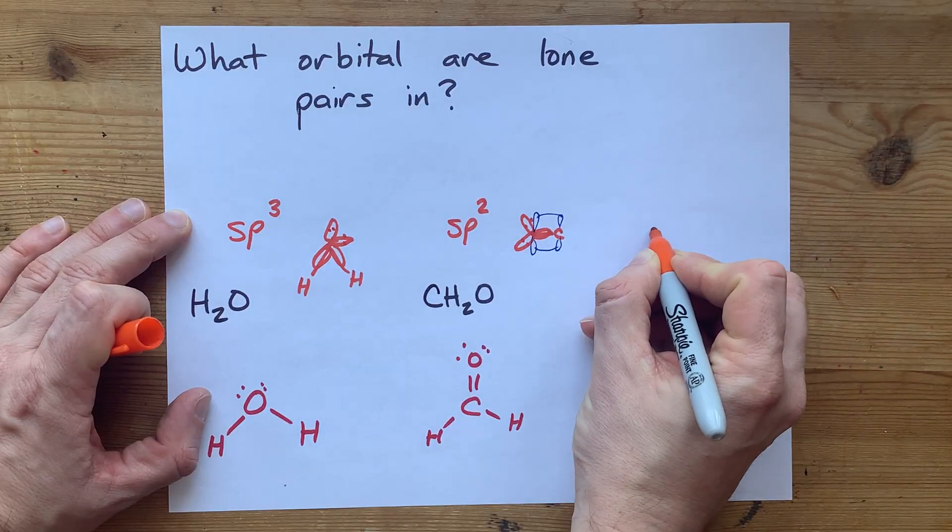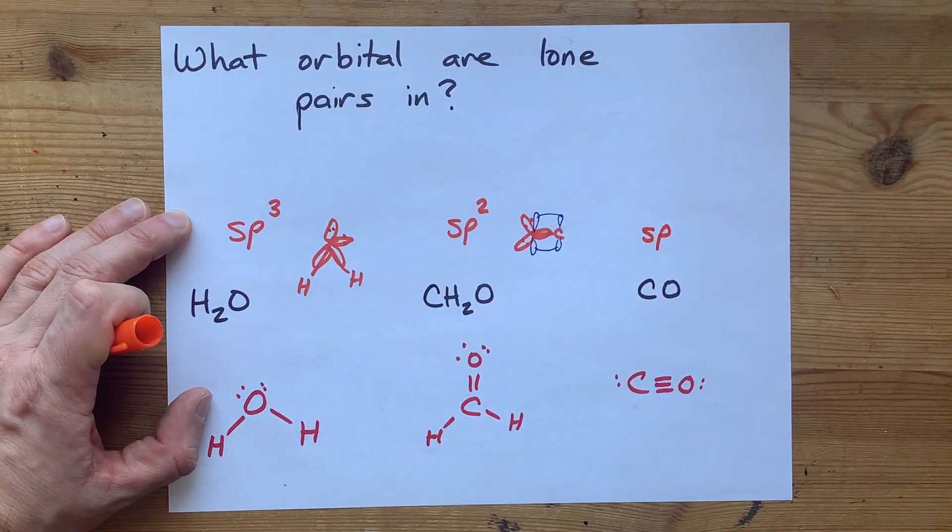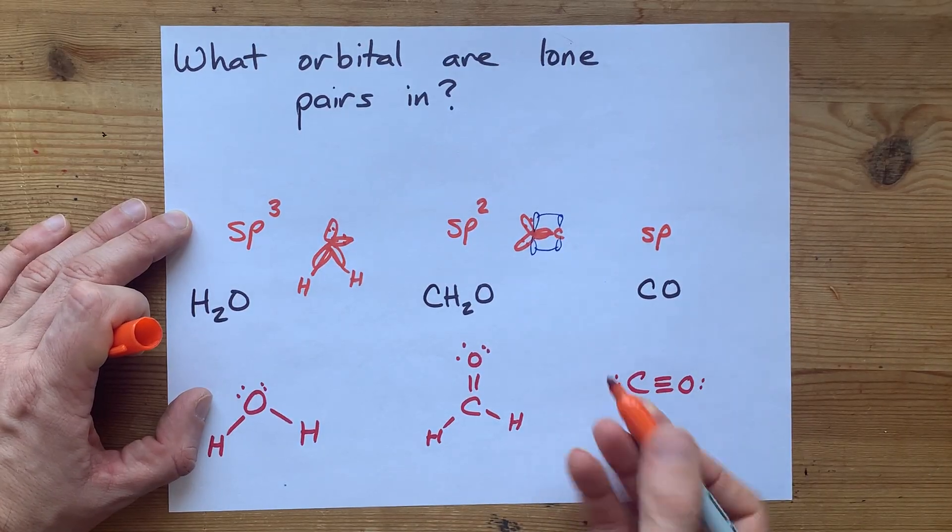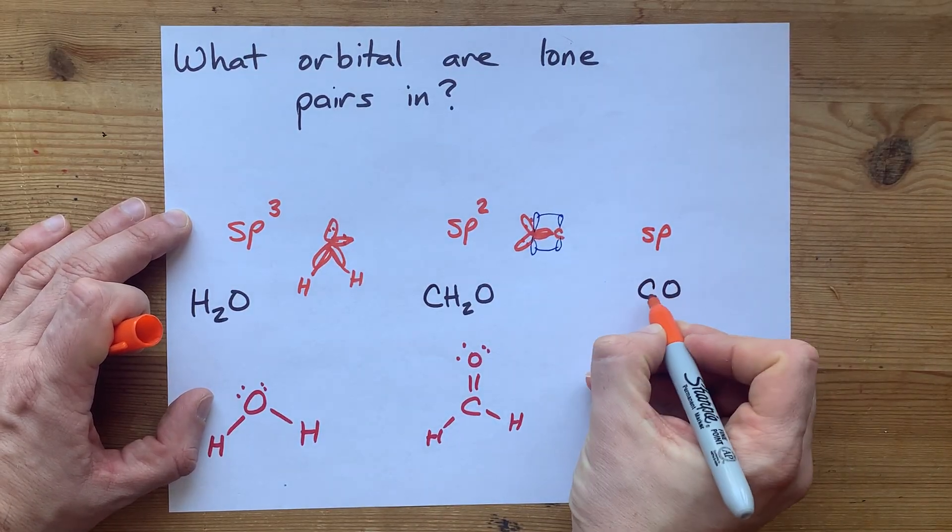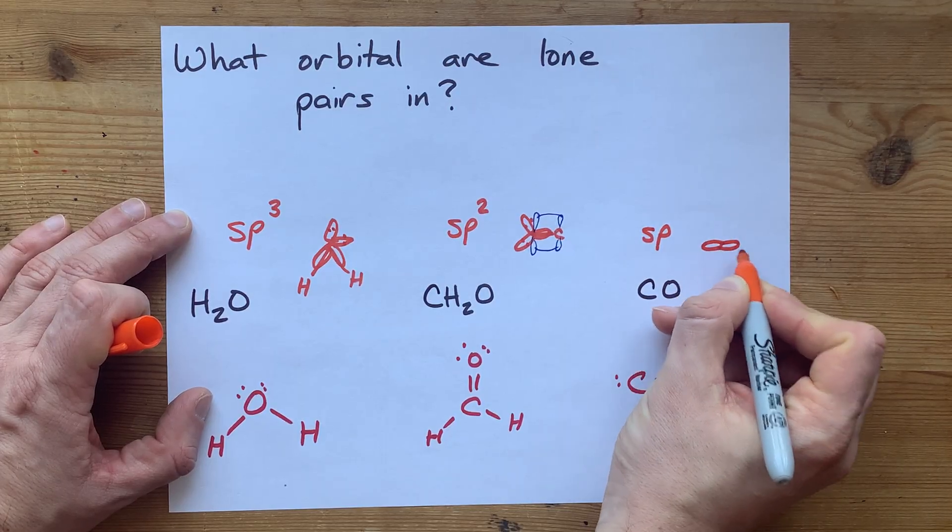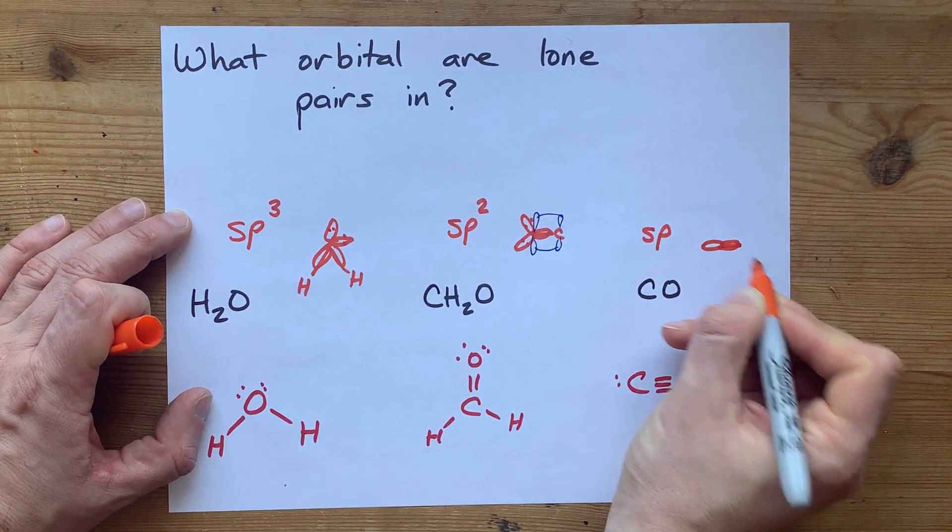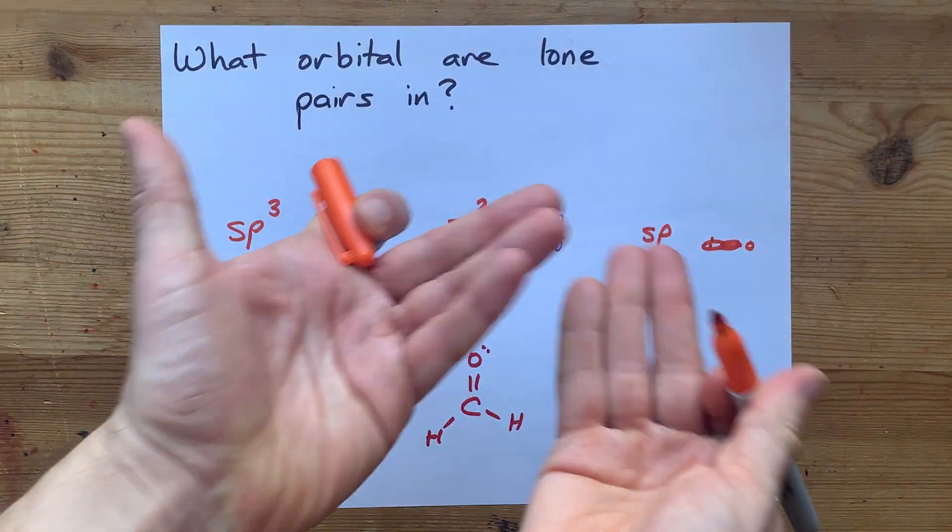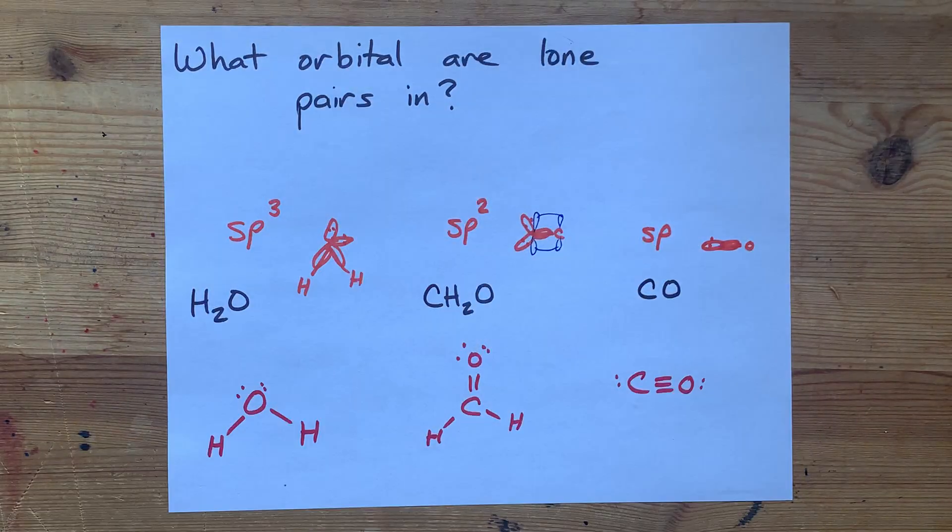The carbon and the oxygen each are sp hybridized, which occur in a linear arrangement. Oh look, it's a linear molecule. If I start with the carbon, I'm going to draw my sp orbitals. One of them holds a sigma bond to the oxygen.